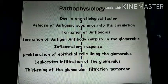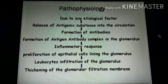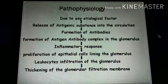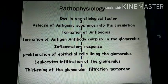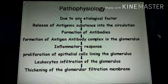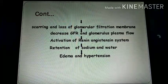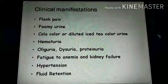Due to the etiological factors, antigenic substances circulate and the body releases antibodies. Antigen-antibody complexes form and travel to the glomerulus, triggering an inflammatory response. These larger molecules cause inflammation, leading to epithelial cell proliferation and leukocyte infiltration. The membrane becomes thicker and scarred, GFR decreases, and the renin-angiotensin system activates, causing retention of sodium and water, resulting in oedema and hypertension.